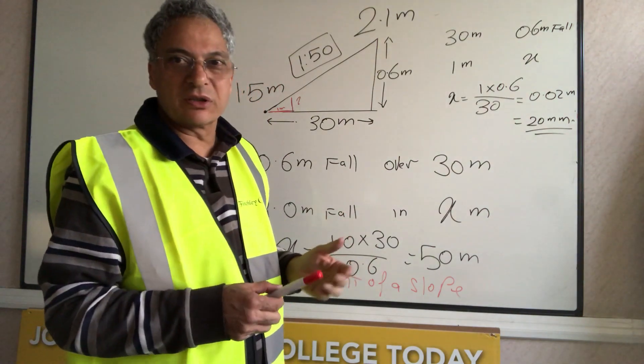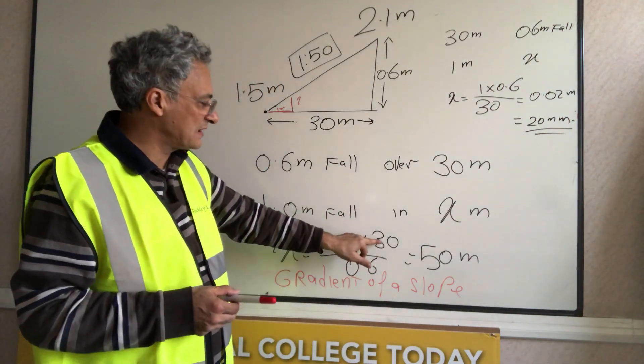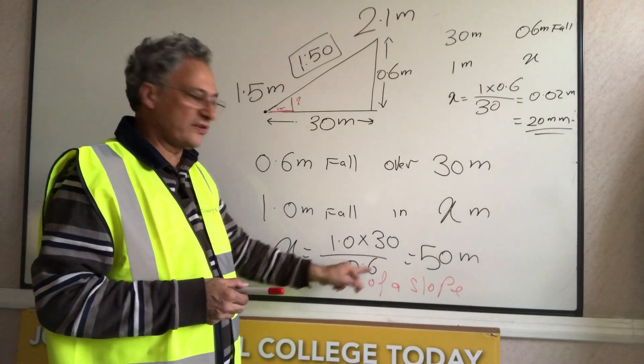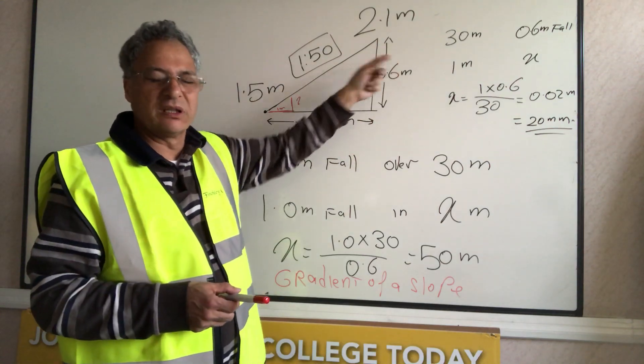So simply to calculate the gradient of a slope, we'll simply divide the length over the fall. 30 over 0.6 gives me 50. If we have the length, if we have the fall, we have the gradient.